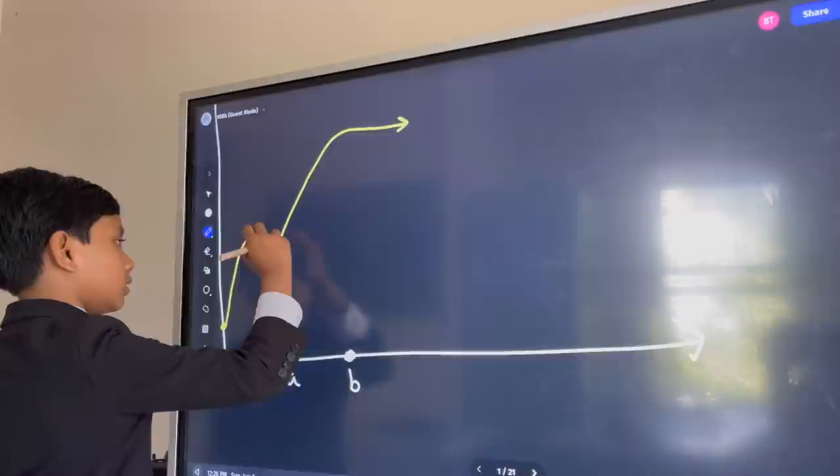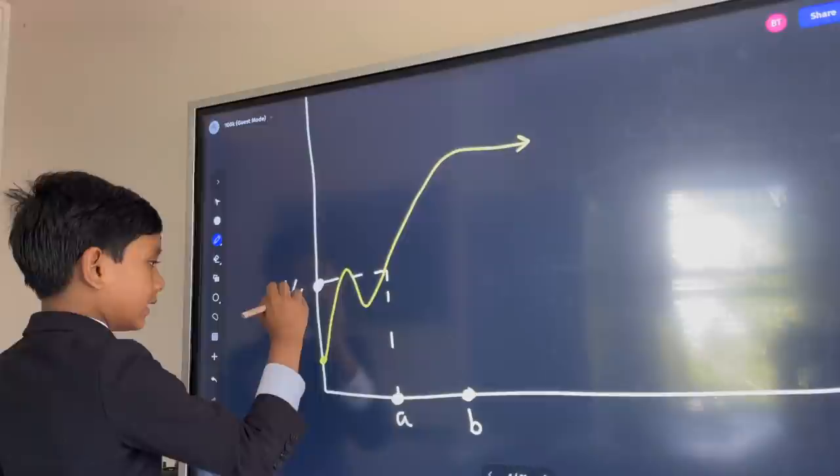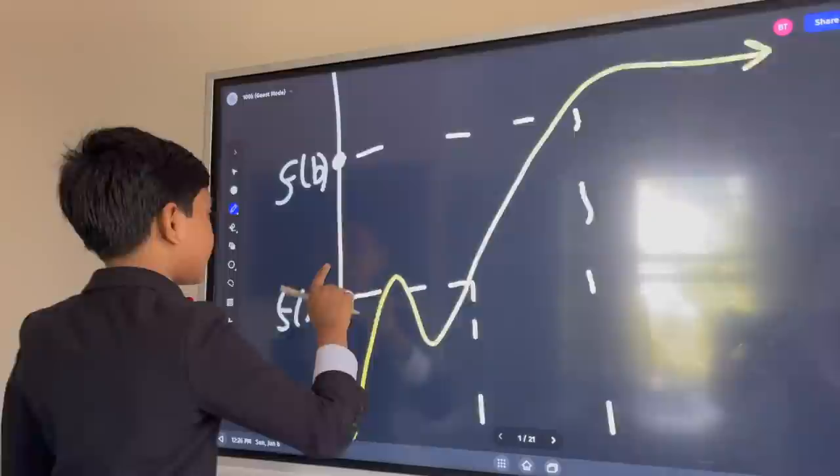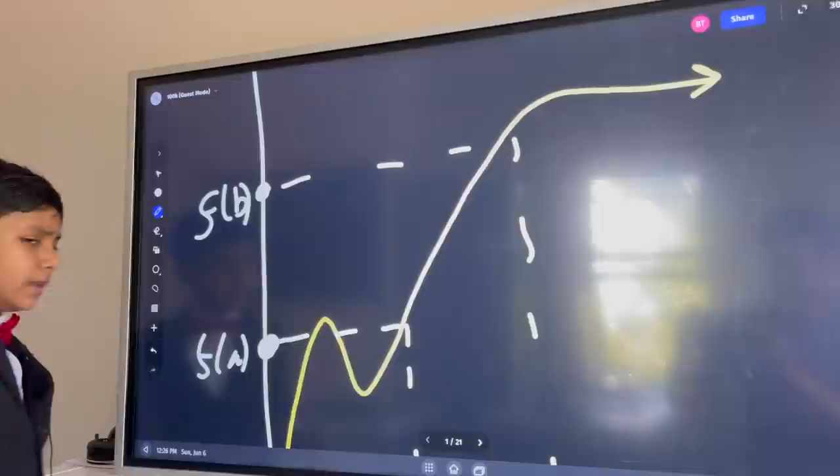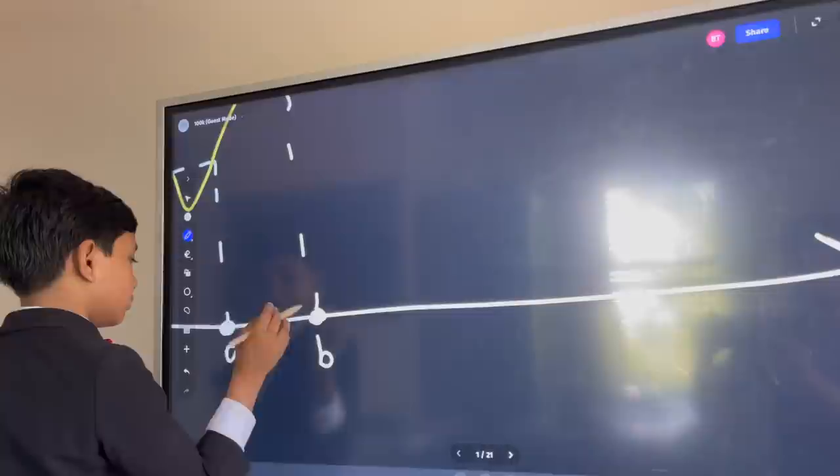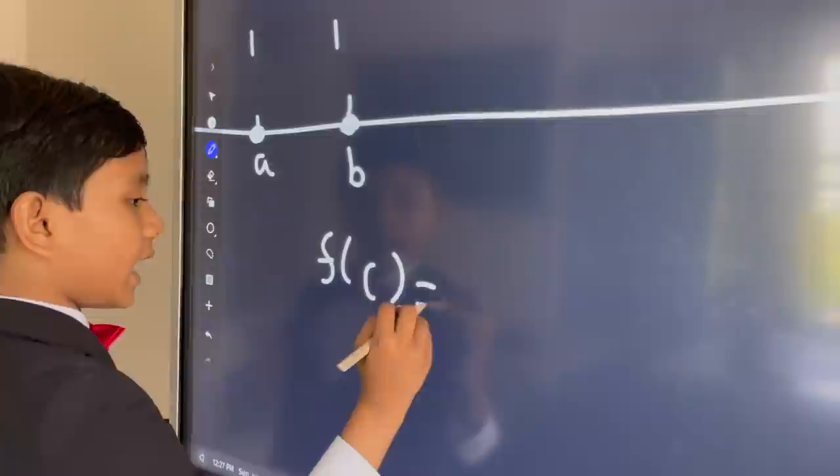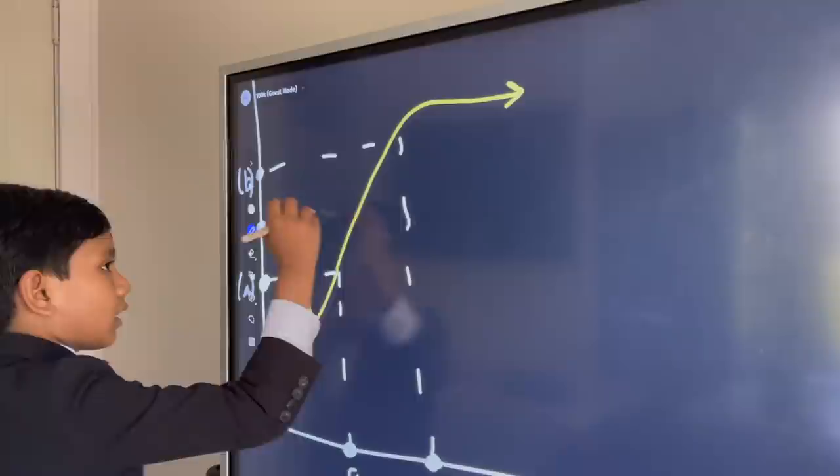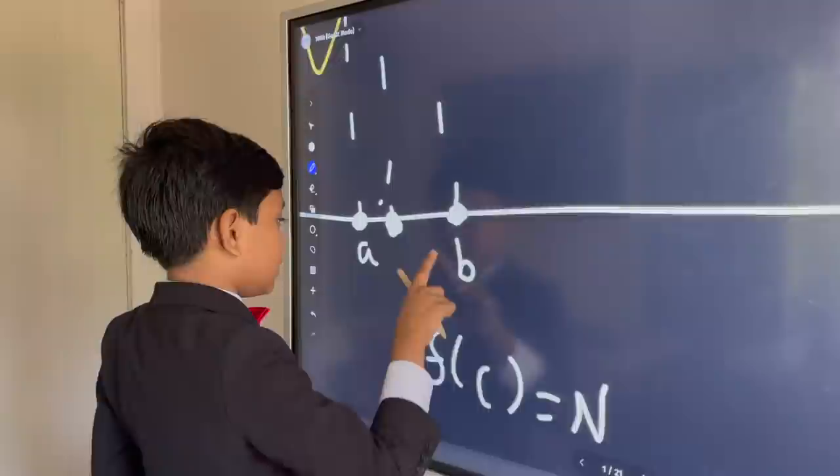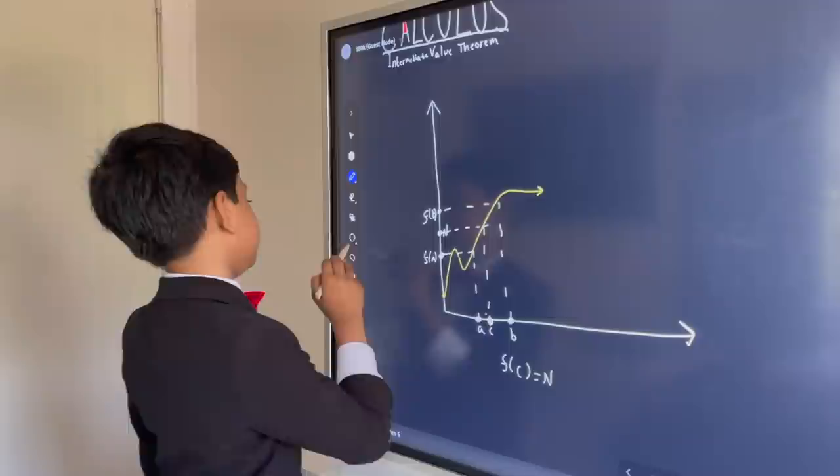Alright, so this is f of a, this over here is f of b, and now the law tells that if there is somewhere between these two numbers f of a and f of b there is a number n, then there must be a number c between these two and that means that f of c must be n. That must be true. So let's test this out. We slice right through the number, slice, and see it's right in the middle. Theory proved. So that is our c, and so that is how the theorem works.